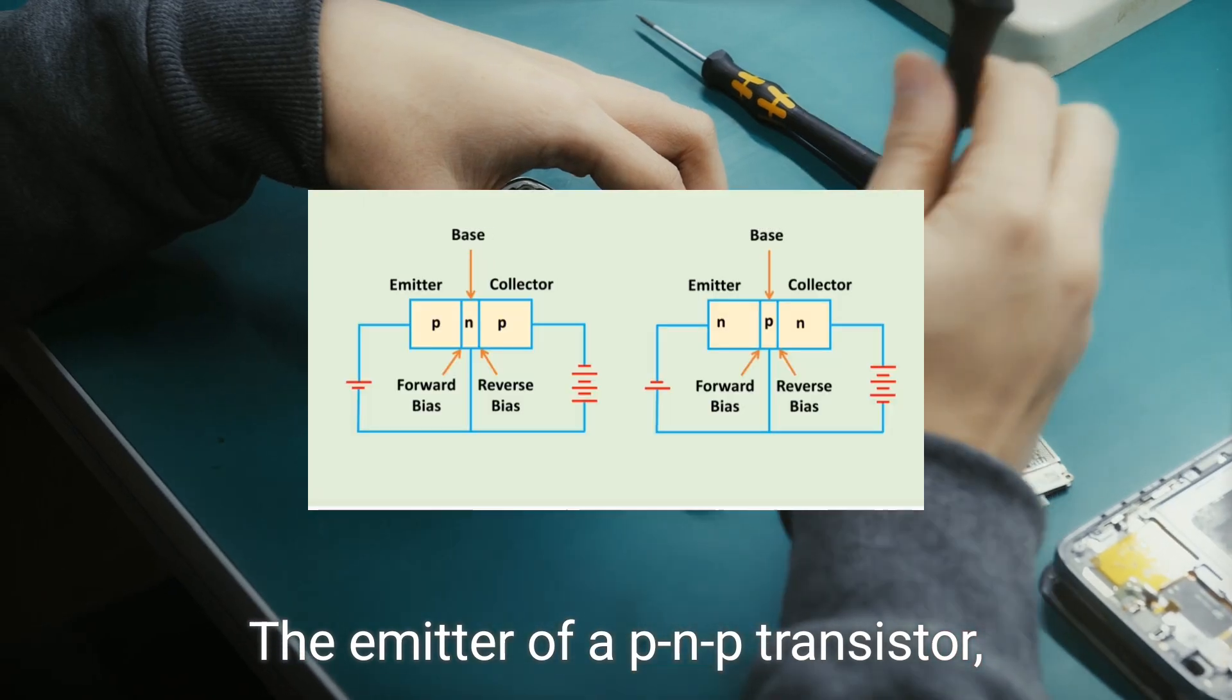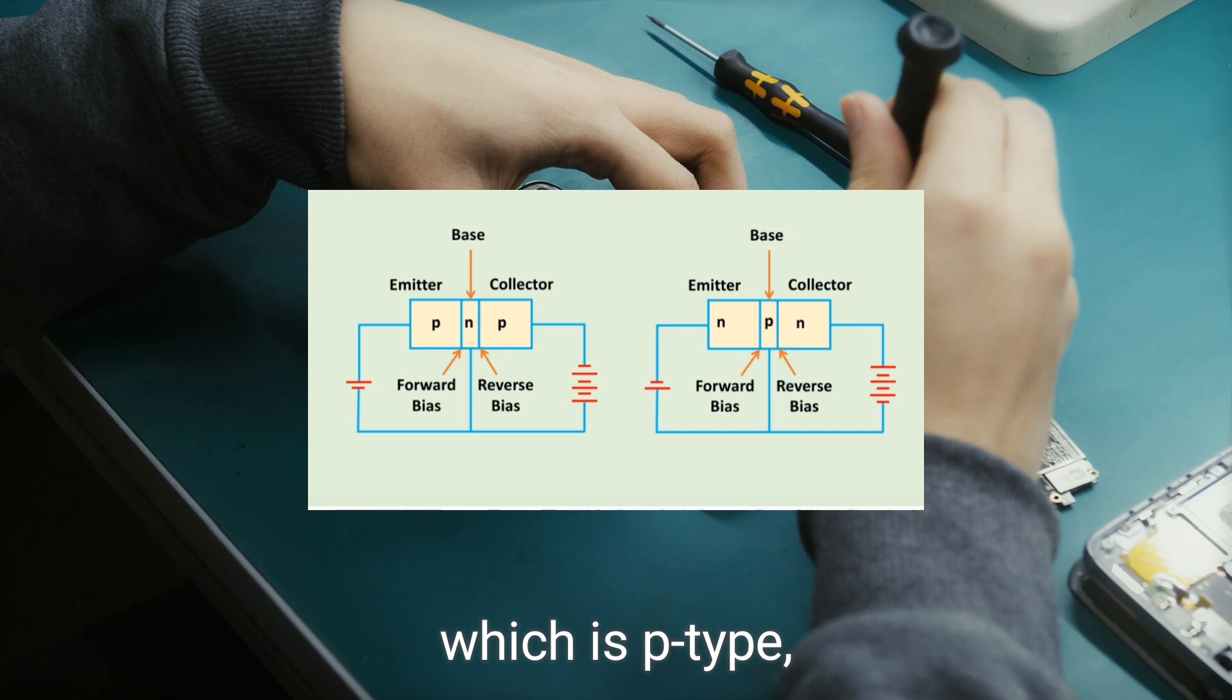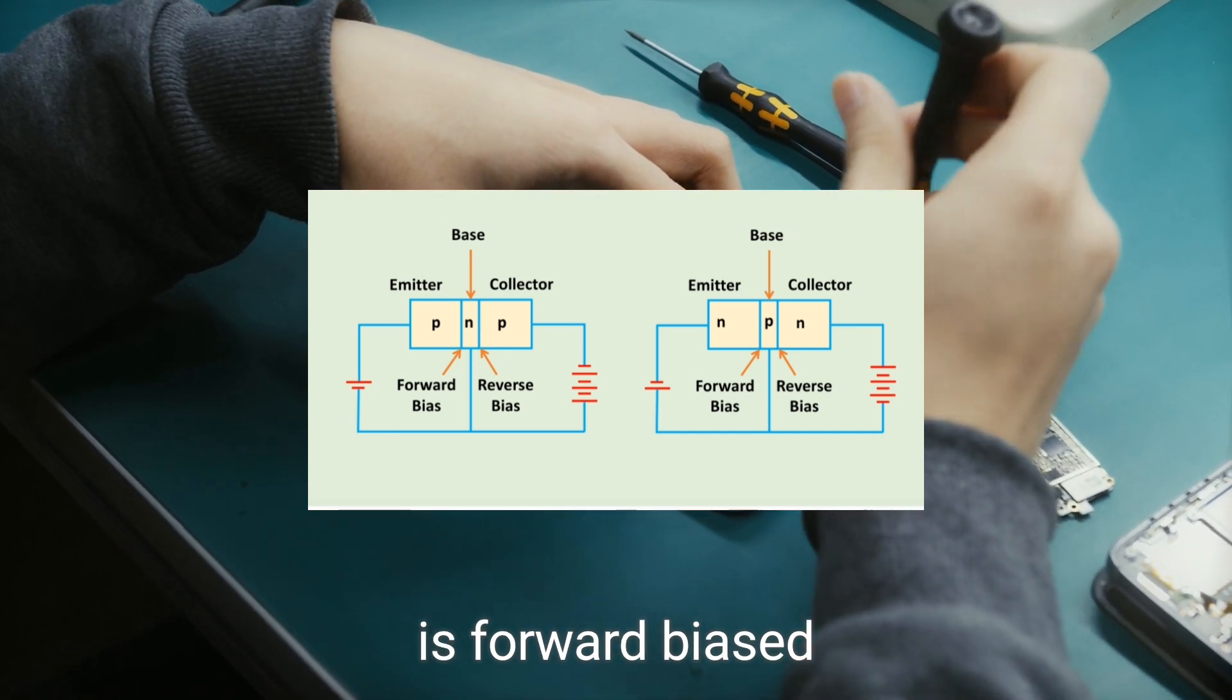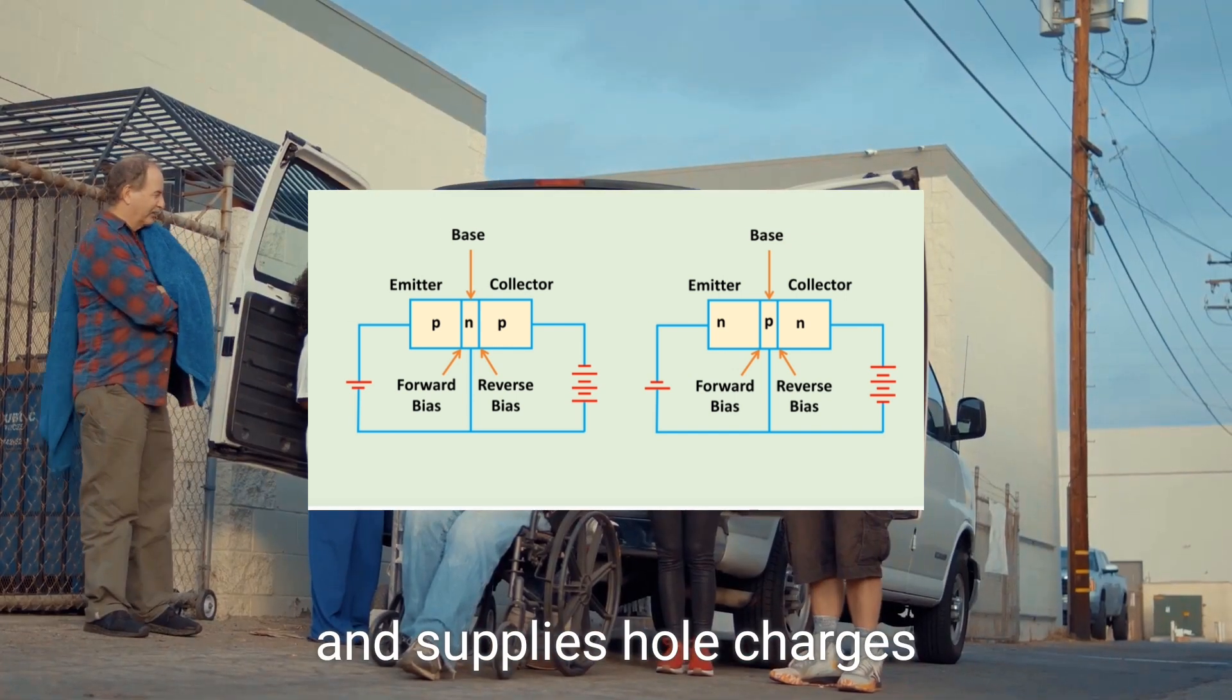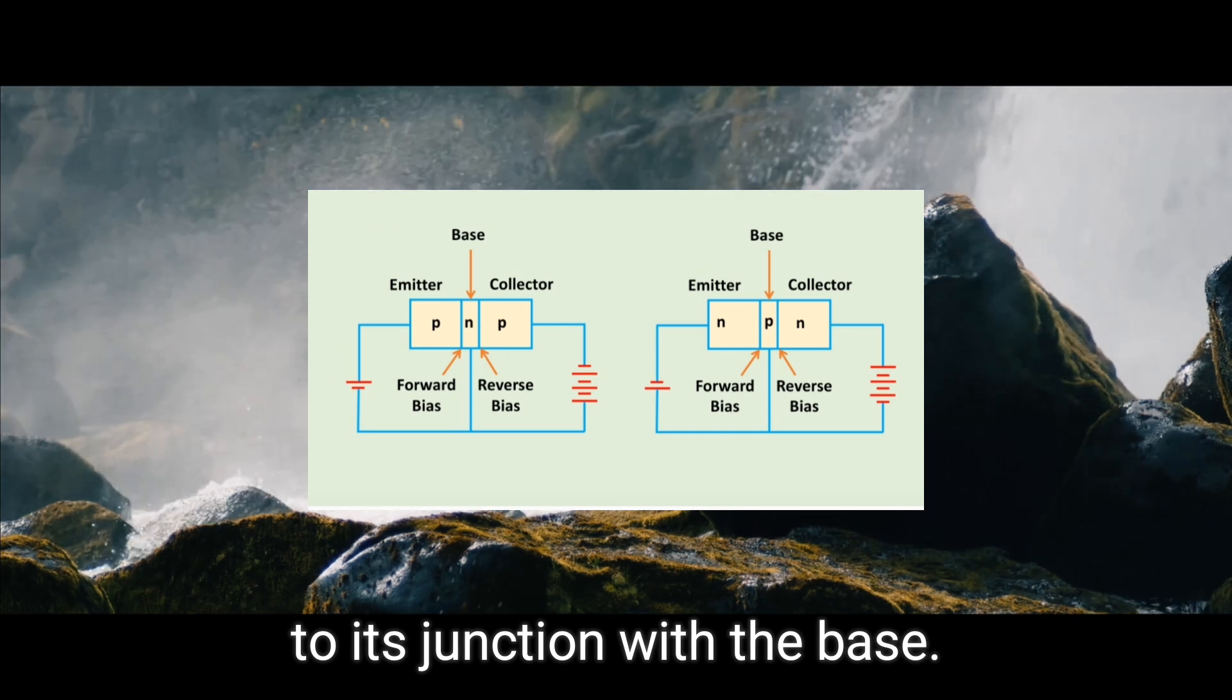The emitter of a PNP transistor, which is P-type, is forward biased and supplies hole charges to its junction with the base.